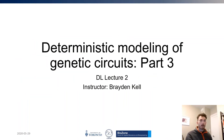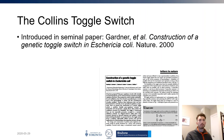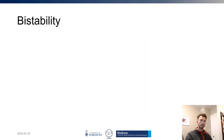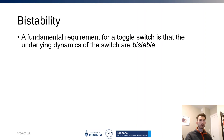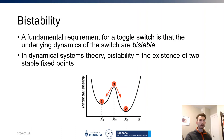This is part three of the second dry lab module, covering the Collins toggle switch—a particular example of a synthetic gene circuit. The Collins toggle switch was introduced in the seminal paper by Gardner et al., 'Construction of a Genetic Toggle Switch in E. coli,' published in Nature in 2000. The authors endeavored to realize a genetic toggle switch by rewiring existing gene regulatory networks in E. coli. A fundamental requirement for a toggle switch is bistability—the existence of two stable fixed points.